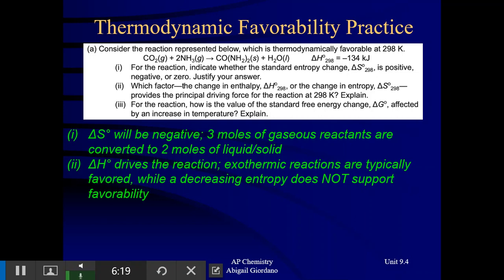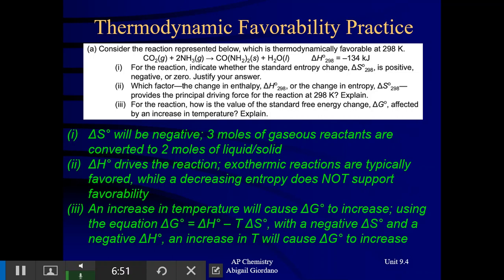Third part: how is the value of delta G affected by an increase in temperature? Go back to that plus-minus chart from unit 9.3. When you have a negative delta H and a negative delta S, the chart says: favored at low temps. So what's going to happen if we increase the temperature? An increase in temperature is going to cause delta G to also increase — meaning the reaction is going to become less and less favored. With a negative delta S and a negative delta H, mathematically if T goes up, that's going to cause delta G to also go up. You can always use math to explain your answers.